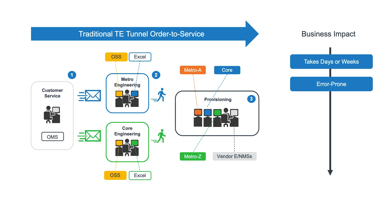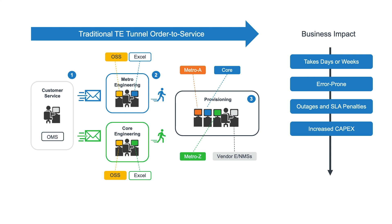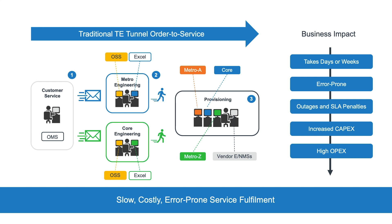The process can be error-prone, or engineers may use a best guess to avoid prolonged complex engineering intervals — reusing an existing tunnel — which can result in congestion and SLA penalties. Engineers are generally blind to the true state of optical shared risk link groups, which can result in protected tunnels with a single point of failure, leading to outages and SLA penalties. Inefficient, over-provisioned, and underutilised tunnels increase CAPEX, while high OPEX lowers margins and impacts competitiveness. The challenge is to deal with slow, costly, and error-prone service fulfilment.